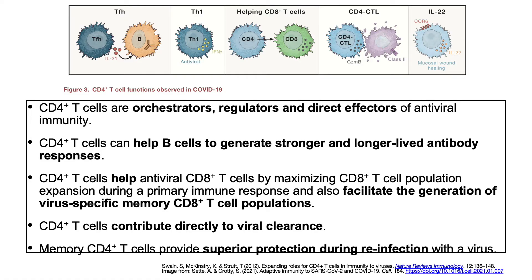Why are all immune defenses of a person with HIV affected if it is specifically the CD4 cells that are targeted? This happens because CD4 T-cells have many functions. Aside from their own direct effect on antiviral immunity, they also affect the function of other cells in the immune system, including B-cells and CD8 cells. So basically, the immune response of people with HIV is broadly affected.